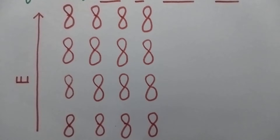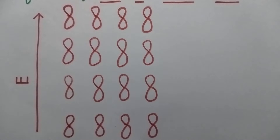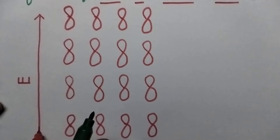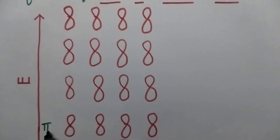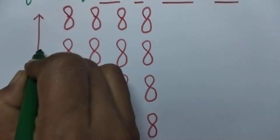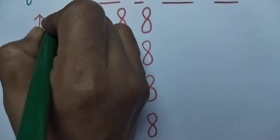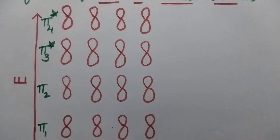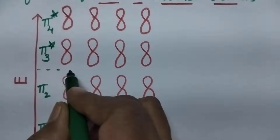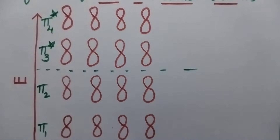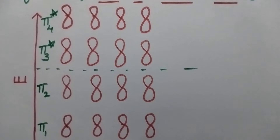These pi molecular orbitals are named as π1, π2, π3* and π4* molecular orbitals. The first two, π1 and π2, are the bonding molecular orbitals, whereas π3* and π4* are anti-bonding molecular orbitals.